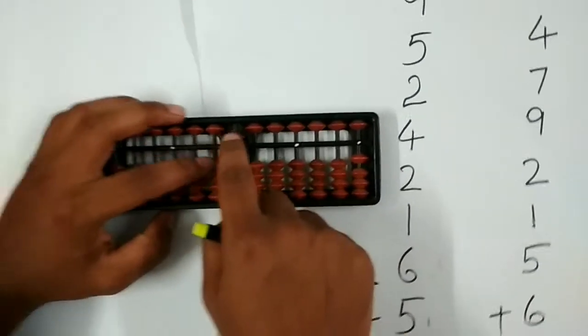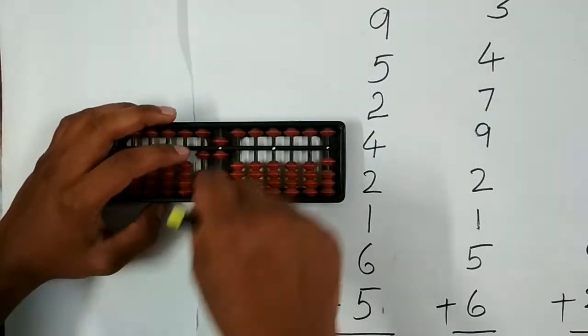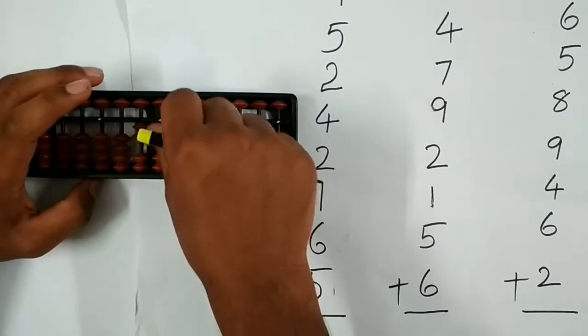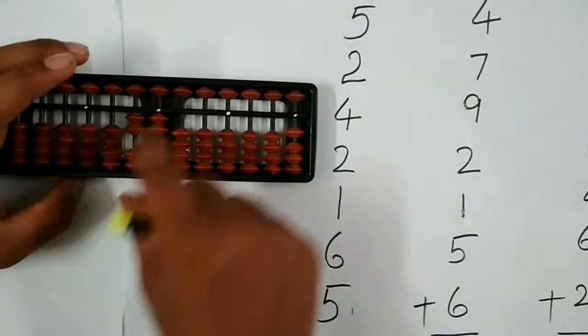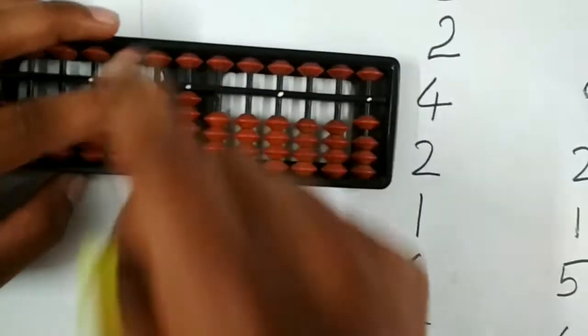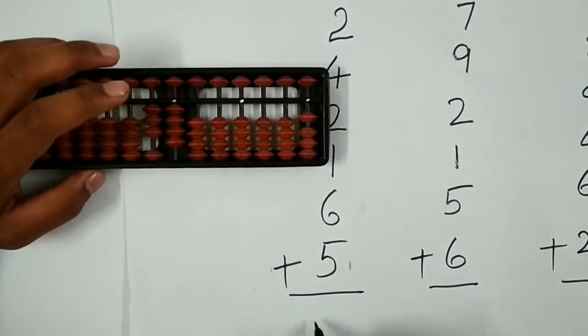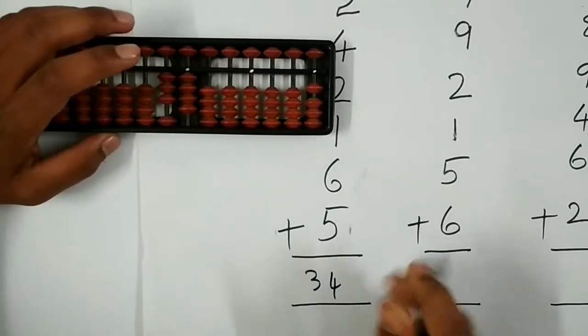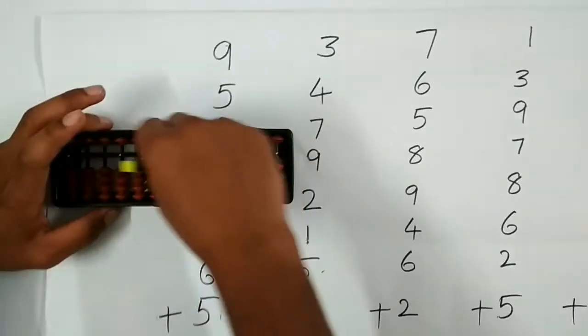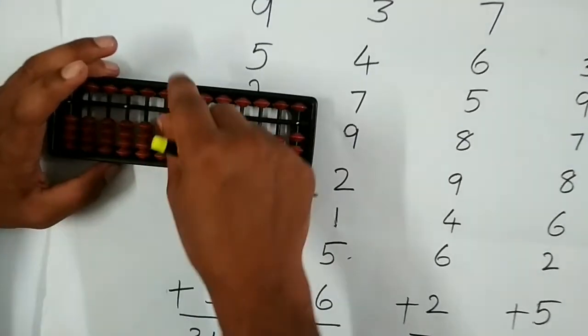9, 5, 2, 4, 2, 1, 6, and 5. The answer is 34. Let's go to the next sum: 3, 4,